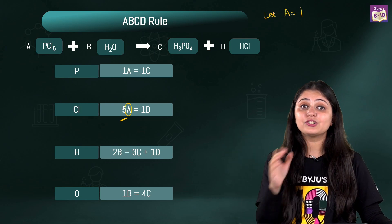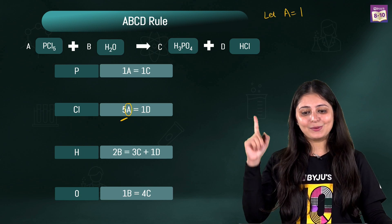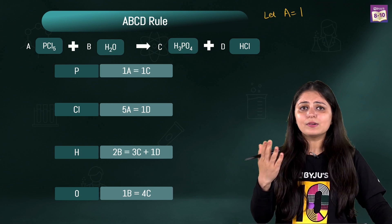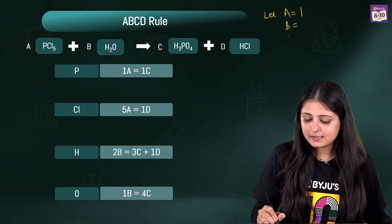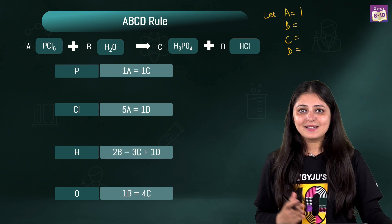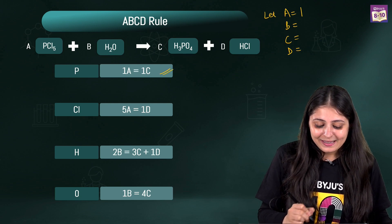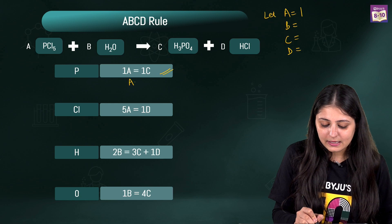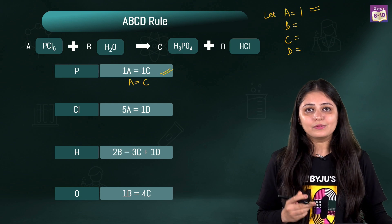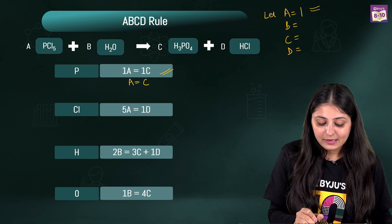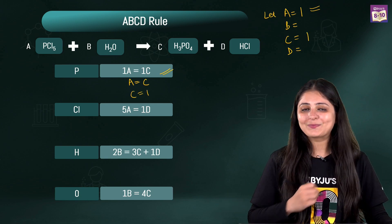The largest number is 5, and its coefficient is A, so we let A = 1. We don't know B, C, or D yet, but our equations will help us. From equation 1: 1A = 1C, which means A = C. Since A = 1, C is also equal to 1.